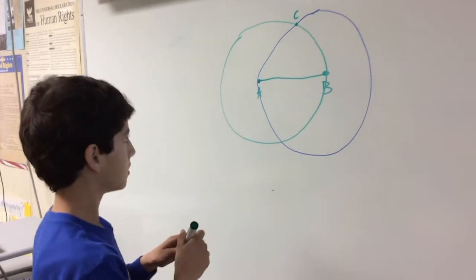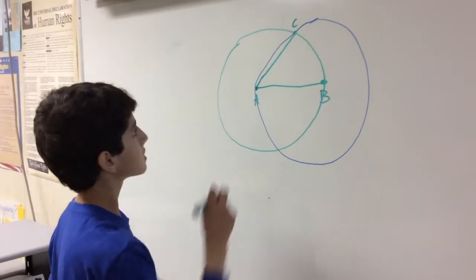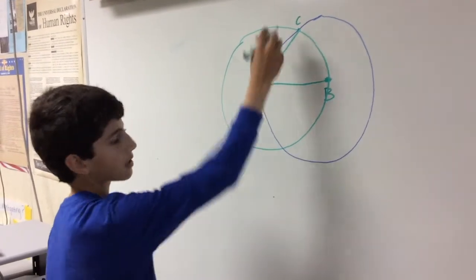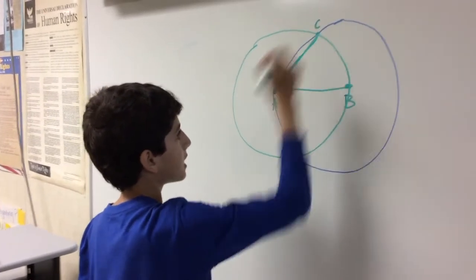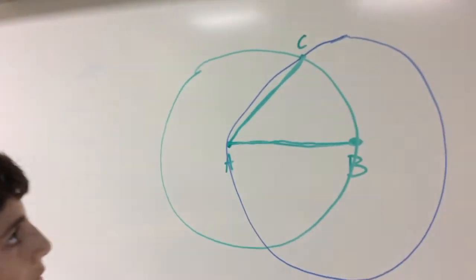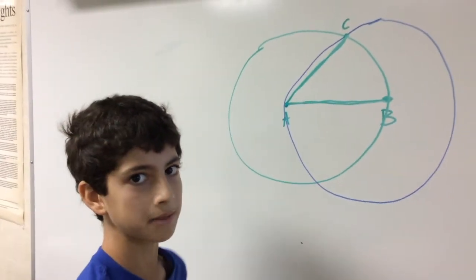And now, I'm just going to draw a line from A to C. Just try not to picture the blue circle. Just look at the green circle. If you could see, this line and this line are both the radius. And no matter where the radius is, as long as it crosses through the middle of the circle, it's the same size.